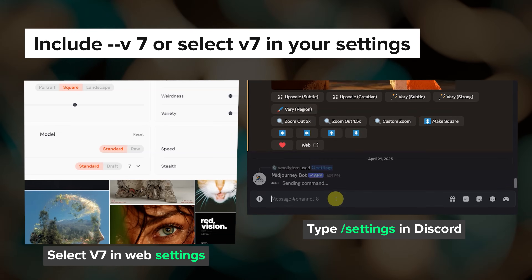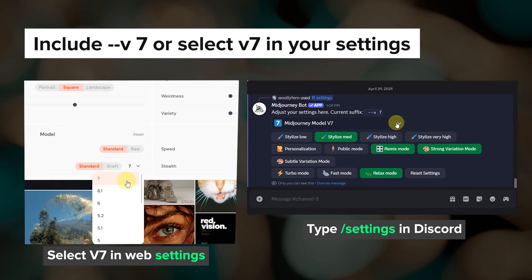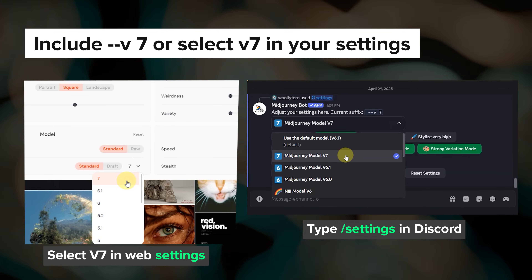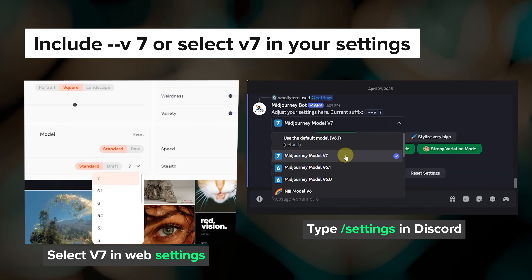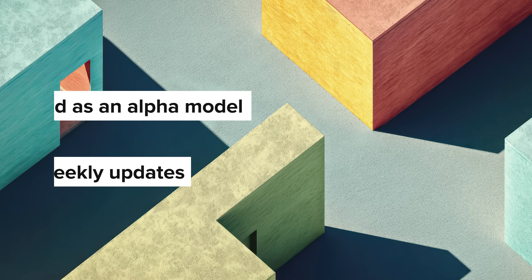You can access V7 by including --v7 in your prompts or set it as the default model in your settings. V7 launched as an alpha model with near weekly updates being released before they set it as the default model in a few weeks from now.